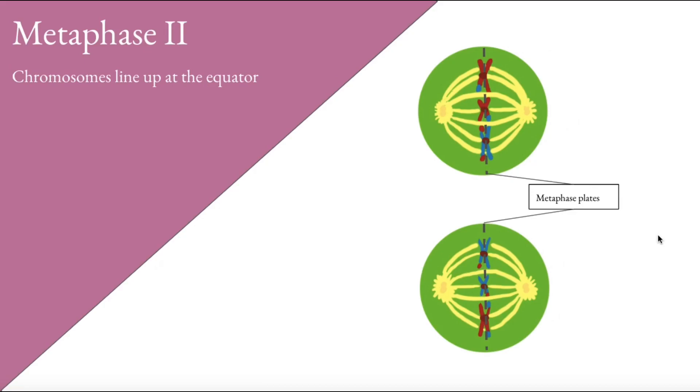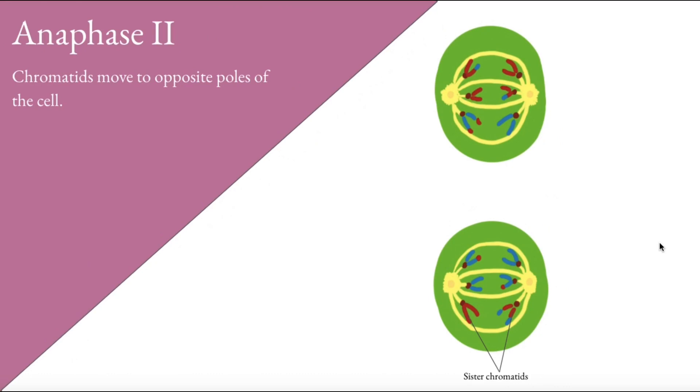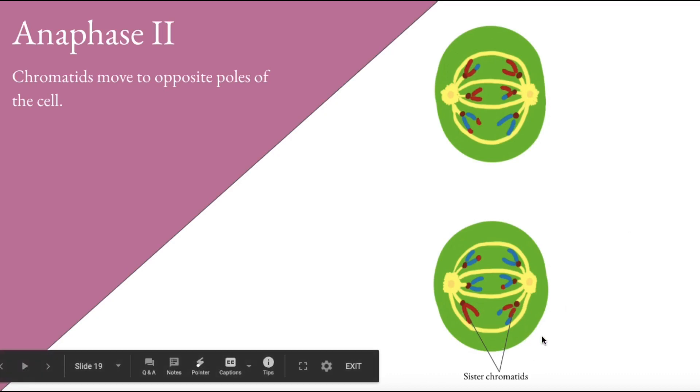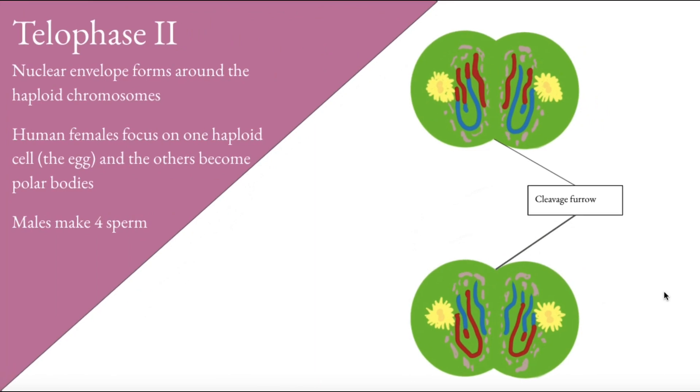It will then go through metaphase II where the chromosomes line up at the equator, but this time in anaphase, the chromatids will move to the opposite poles of the cell. These sister chromatids are moving to the opposite poles, and you can see the genetic variation that occurred during the first prophase. From there, telophase is entered where the nuclear envelope forms, creates the proteins needed for the cleavage furrow to develop, and separate these into four distinct haploid cells with half the DNA of the original diploid cell.